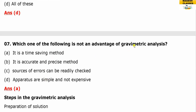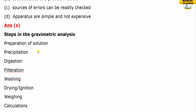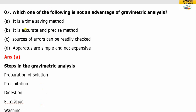Question six: which of the following is not an advantage of gravimetric analysis? The answer is the time-saving method — it is not a time-saving method. The steps in gravimetric analysis are: preparation of solution, precipitation, digestion, filtration, washing, drying, weighing, and calculation. It is, however, an accurate method where errors can be readily checked and the apparatus is simple.